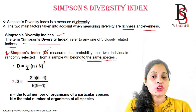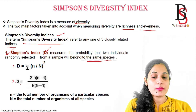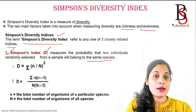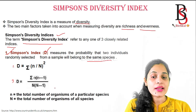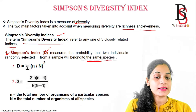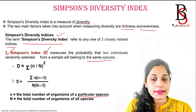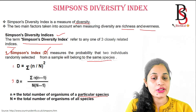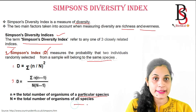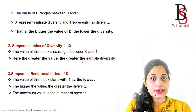The first formula is D = Σ(n/N)², and the second is D = Σ[n(n−1)] / [N(N−1)], where small n represents the total number of organisms of a particular species, and capital N represents the total number of organisms of all species.